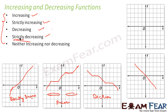Then there are functions which are neither increasing nor decreasing. For example, this kind of function which increases and then decreases. So we have some interval where it increases and some interval where it decreases. Such functions are neither increasing nor decreasing. If I have any function, I can classify it into one of these five buckets.